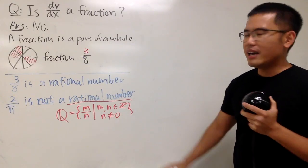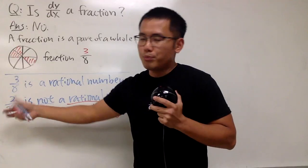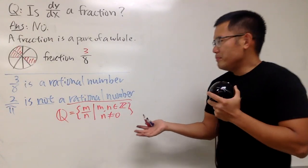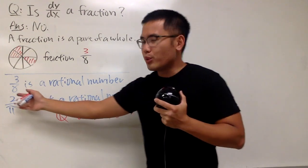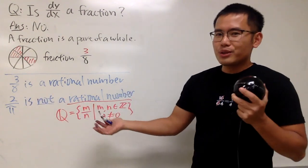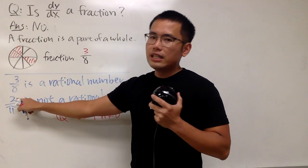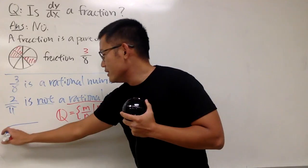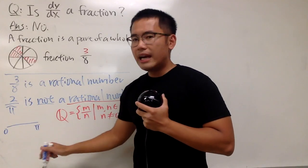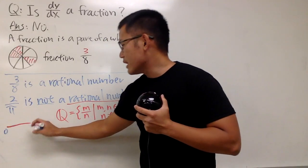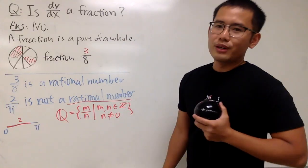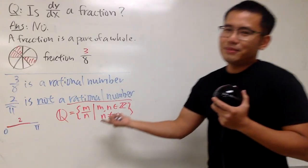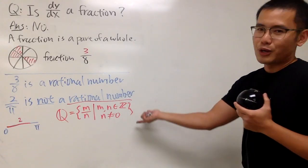You might be thinking: they both look like fractions, so can you just call that a fraction? I think it's okay — people are not going to be mad at you — because when you have 2 over π, you can still call that a fraction. It's like 2 centimeters out of π centimeters: you have a length of 0 to π and you're taking 2 centimeters out of it. So that might work as a fraction with the same ratio, but it's not a rational number.